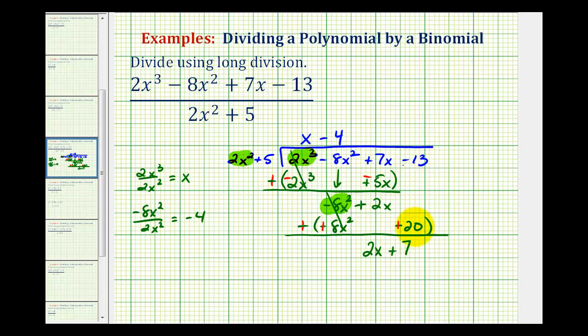Notice we've used all the terms now. And this is our remainder. Notice how the degree of the remainder is less than the degree of the divisor. So we'll have plus our remainder of 2x + 7 all over our divisor of 2x² + 5. So this is the result of our division, which is called the quotient.